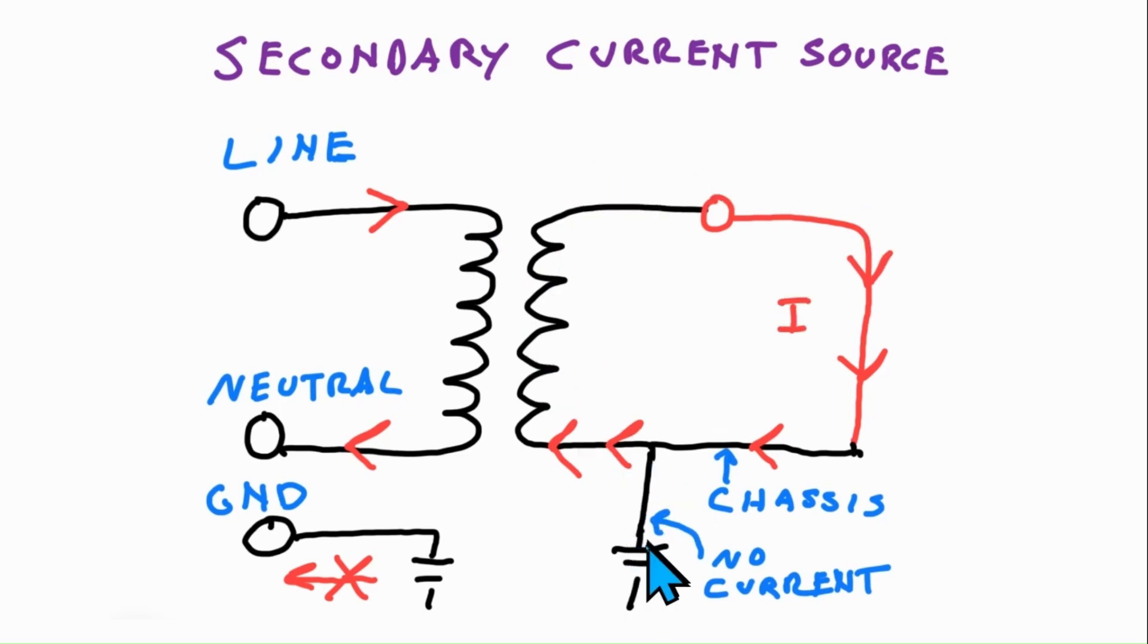This side of the transformer, or this side of the circuit, is bonded to ground, much like the ground wire is. However, this represents a separate source of current, and when that source of current flows through its load and then goes back to the chassis...